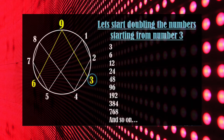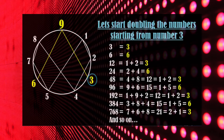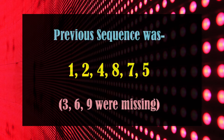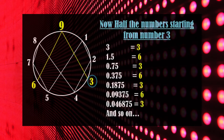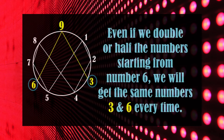But what will happen if we double or half the numbers starting from number 3 or 6? Let's double the numbers starting from number 3. On doubling, we find the digital roots and we get only 2 numbers — 3 and 6 — every time. All the numbers present in the previous sequence are absent this time, and numbers 3 and 6 were completely absent in the previous sequences. Similarly, if we halve the numbers repeatedly starting from number 3, we again get the same numbers 3 and 6. Whether we double or halve the numbers starting from number 3 or 6, we get numbers 3 and 6 only.